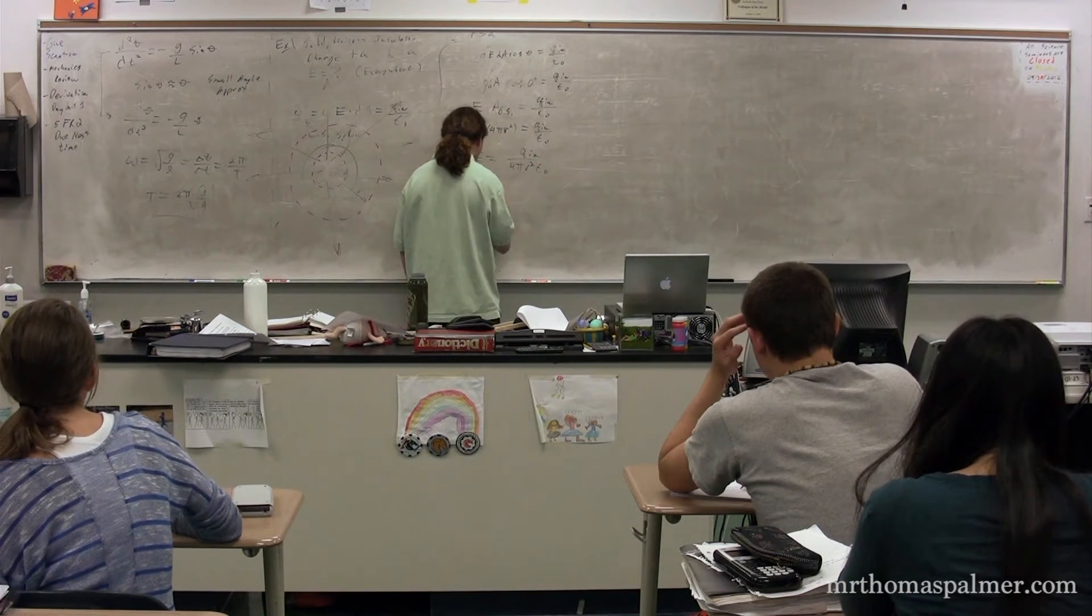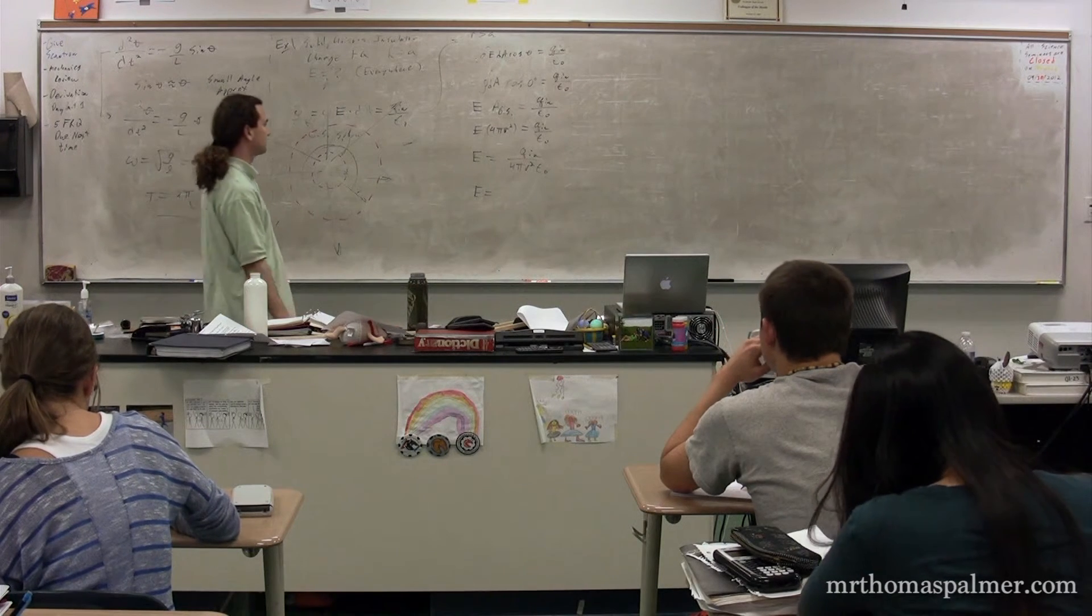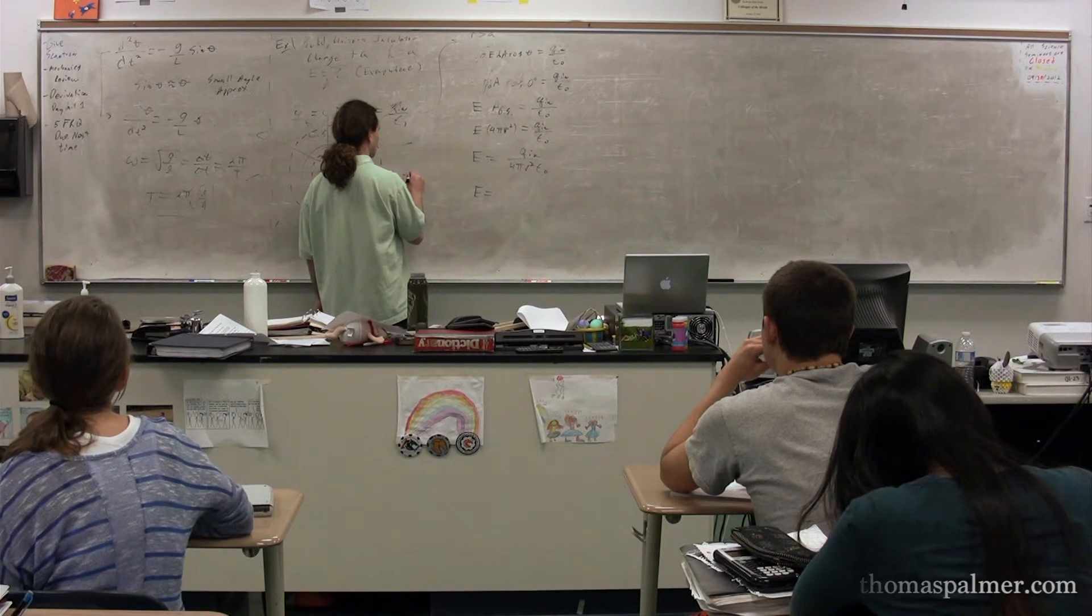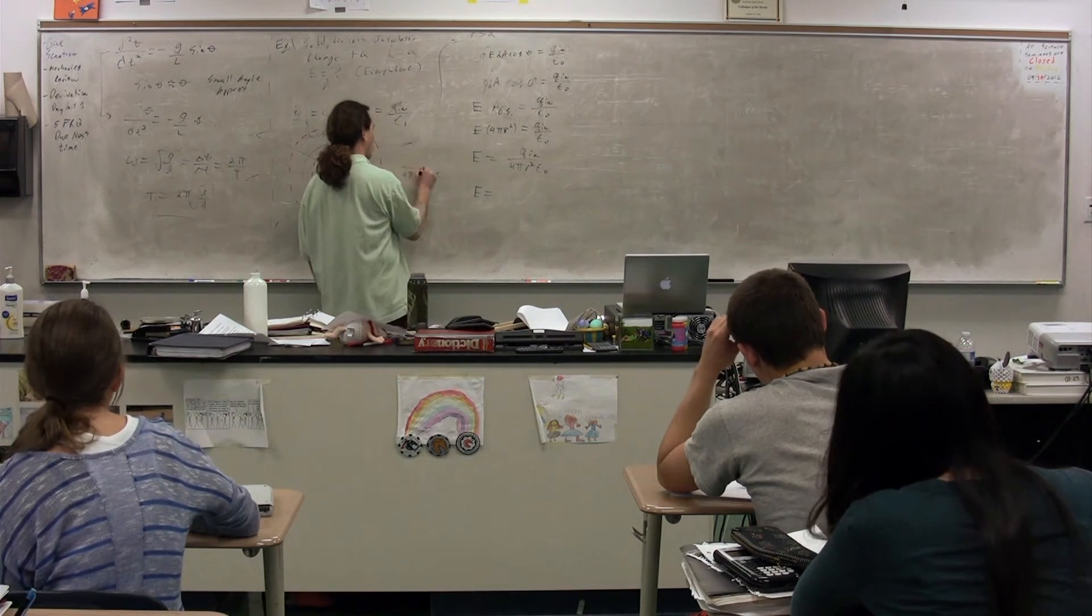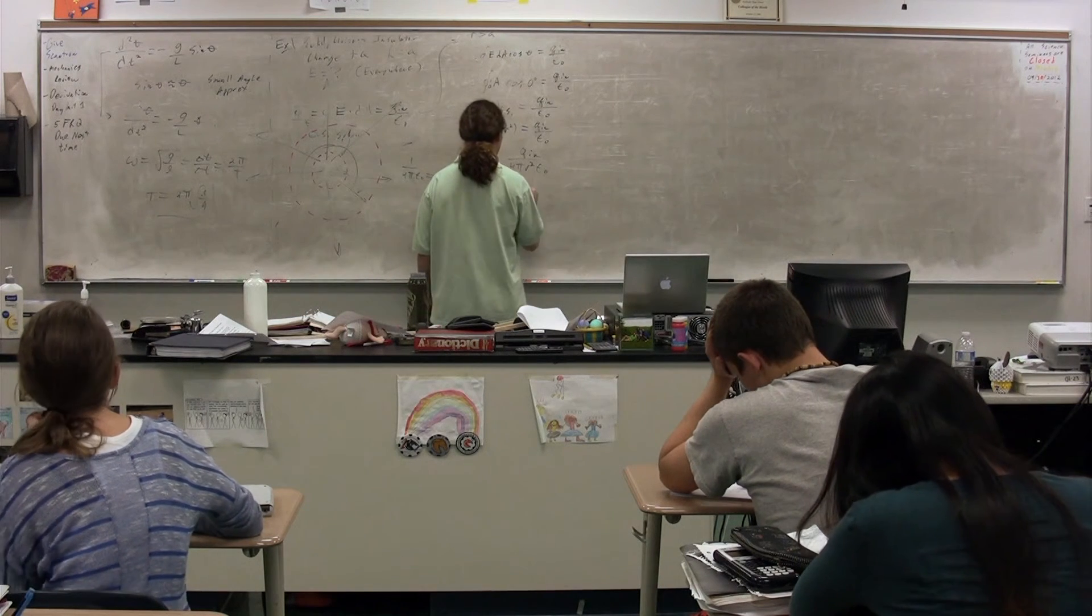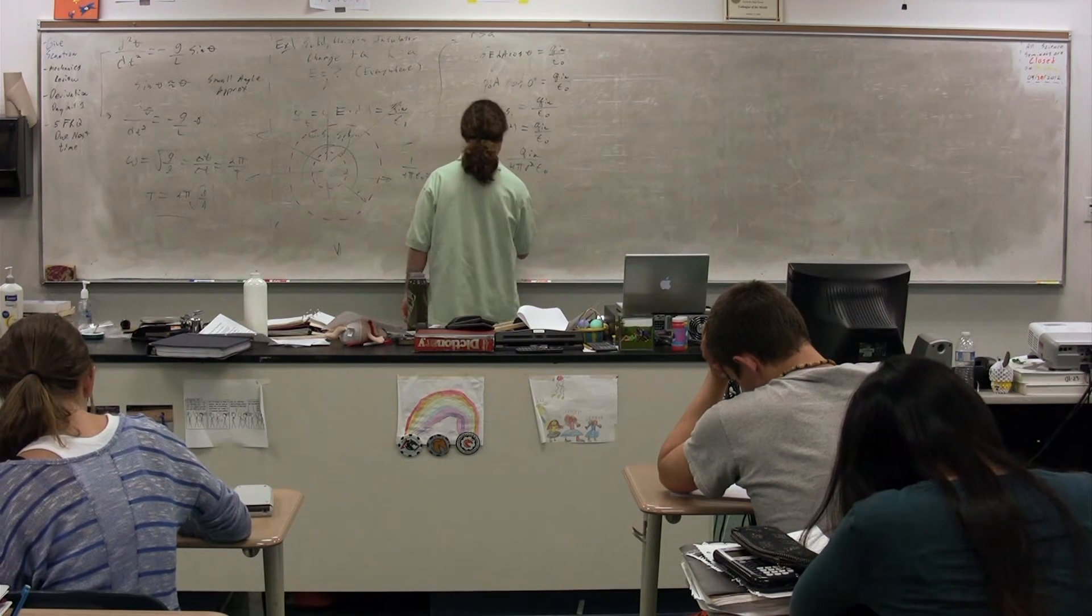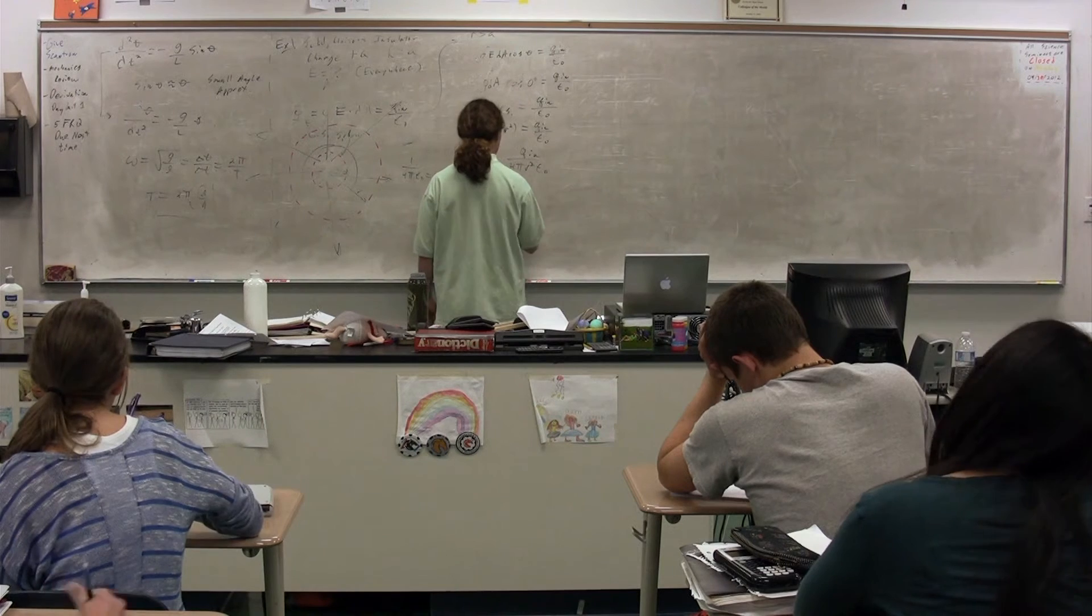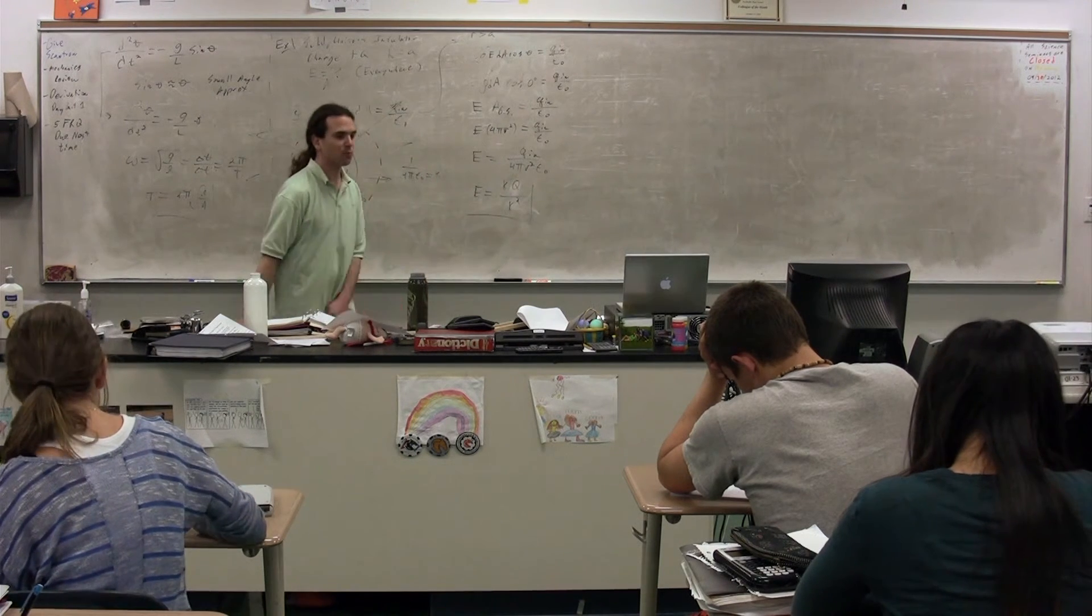Finish it for me, please. You pull out 4 pi epsilon naught, and that's your k constant. 1 over 4 pi epsilon naught equals Boltzmann's constant. Therefore, this is equal to k Q divided by r squared, where Q is the capital Q, the total charge, which is the charge inside. And you should know this because it acts like a point charge.